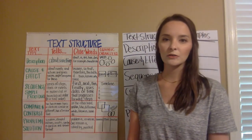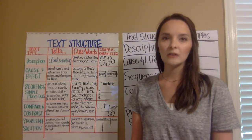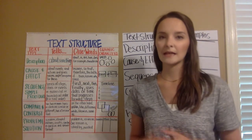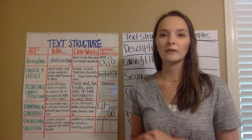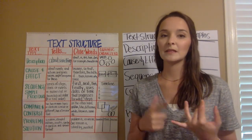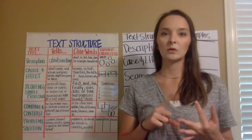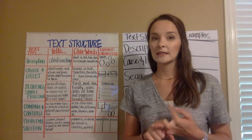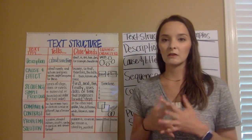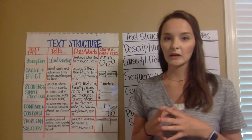The first text structure we're going to talk about out of five is description. A description means that the passage or paragraph you're reading is simply describing something. It may be telling you all about a sport, a person, or a place you visit, as long as it's giving you lots of details about what that thing is.